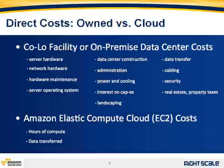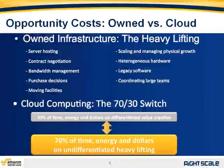Direct costs of building and maintaining on-premise data centers include server hardware, networking hardware, power, cooling, administration, cabling, security, physical security, and even operating system licenses — all ongoing capital as well as operational expenses. From the Amazon Web Services perspective, you simply pay for the compute hours you use, the data transfer in and out of the cloud, and data storage.